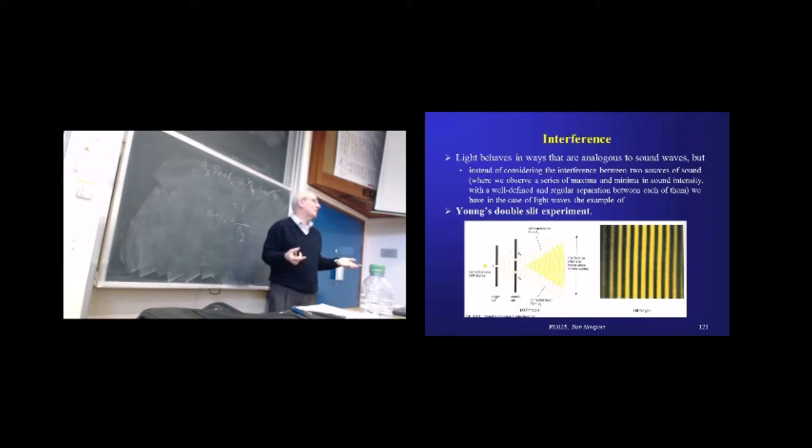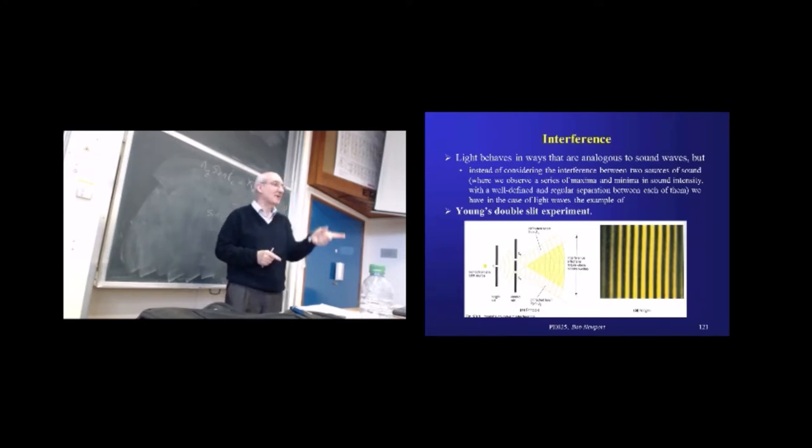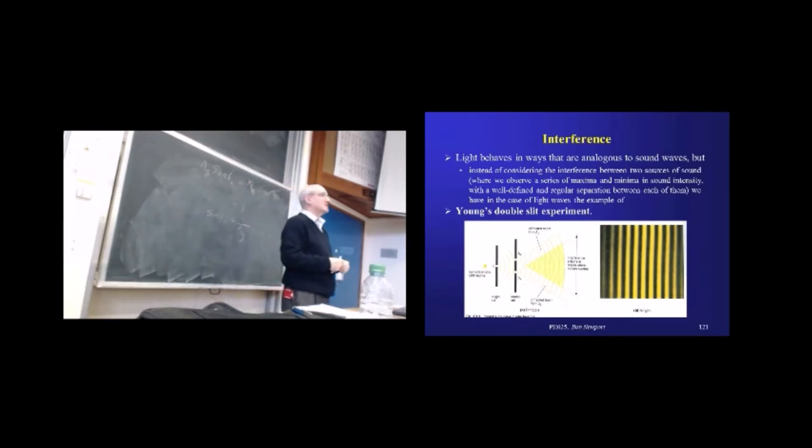Now what do we need for an interference pattern? What is the critical thing we need in terms of a relationship between our two sources of waves? Come on, I've heard vaguely the right thing being whispered. They have to be in phase. Sorry? They have to be in phase. No, not quite. Constant phase. Constant phase relationship. So even if they're out of phase, providing they stay the same amount out of phase, it's fine. So it's a constant phase relationship. That is the key thing.